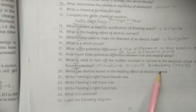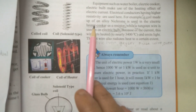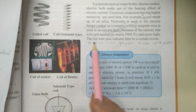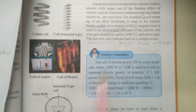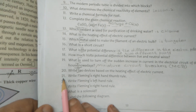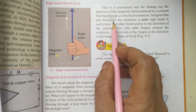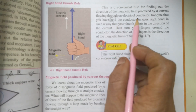Q20: Write two devices based on the heating effect of electric current. Answer (page 49): Heater, cooker, and electric bulb. Other examples include electric iron, geyser, fuse wire, and oven - all these are based on the heating effect of electric current.